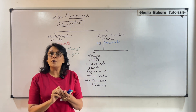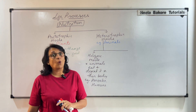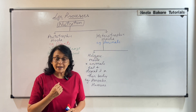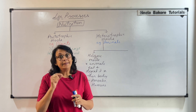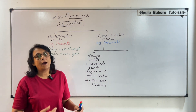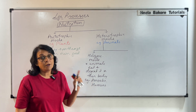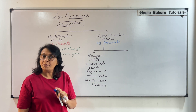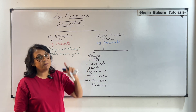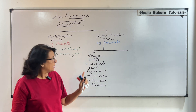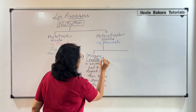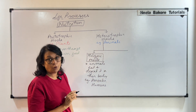In holozoic nutrition, we take something in our mouth, chew it, digest it, and break it down to obtain energy — because the ultimate aim is to obtain energy so that life can be maintained. This is called holozoic mode of nutrition, and it is one type of heterotrophic mode.